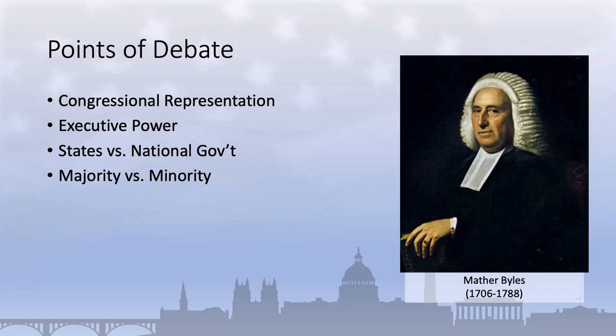The electoral structure of the President—and originally the Senate—reflected a similar mistrust. The President would not be directly elected by the people, but would instead be elected by representatives through an electoral college. Similarly, senators would not be directly elected by the people until after ratification of the 17th Amendment in 1913. Prior to that, senators were selected by state legislators.